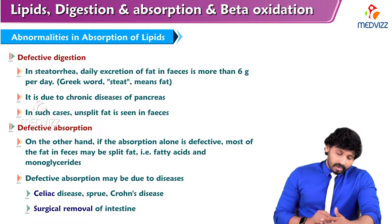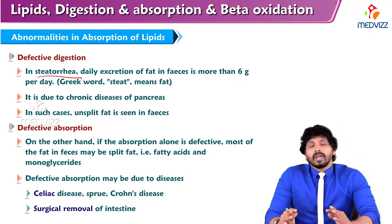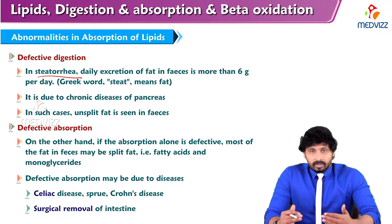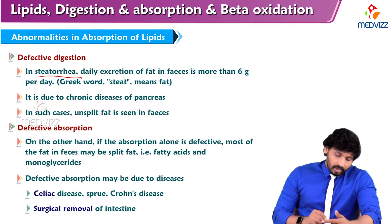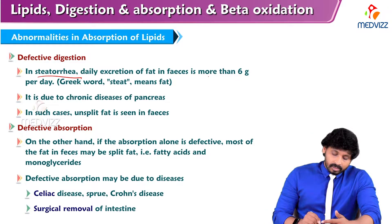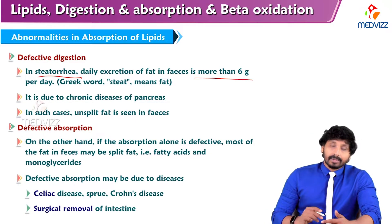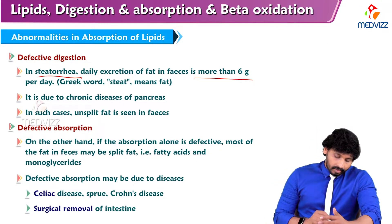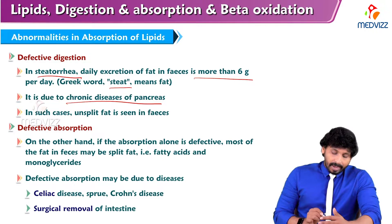The abnormalities relating to digestion include steatorrhea. Steatorrhea is nothing but undigested fatty particles in the feces. If the daily excretion of fat in the feces is more than 6 grams, then it is a condition called steatorrhea. In the Greek language, 'steat' means fat. It is due to chronic disease of the pancreas.